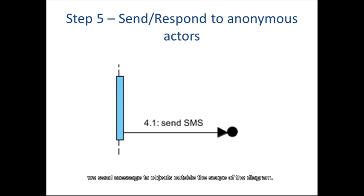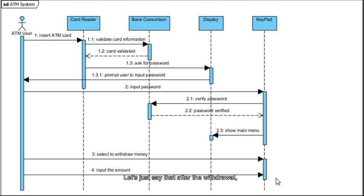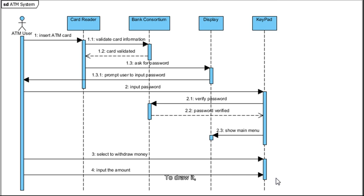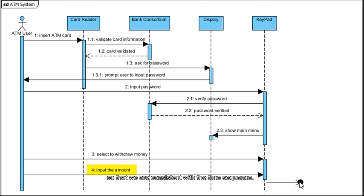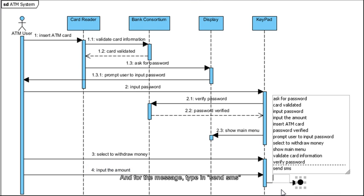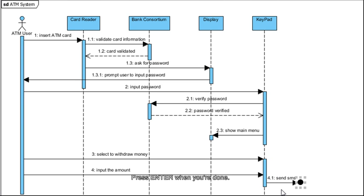In step 5, we send messages to objects outside the scope of the diagram. Let's say that after the withdrawal, the system will send an SMS notification, but we're not concerned about the details of how to do that. Whenever we lack details or don't care about the message receiver in the scope of the current diagram, we model it as a lost message. To draw it, select the vertical bar here under Keypad, look for the icon that reads Lost Message, drag it to the right, move down to a place below message number 4 to be consistent with the time sequence, then release the mouse button. For the message, type in Send SMS and press Enter. We've just finished drawing the entire sequence diagram example.